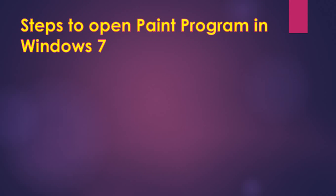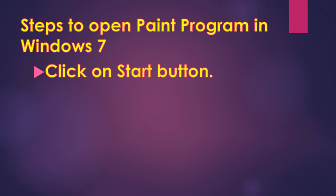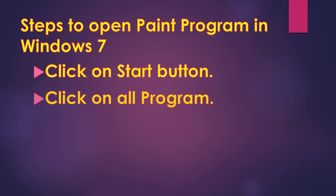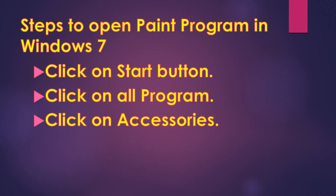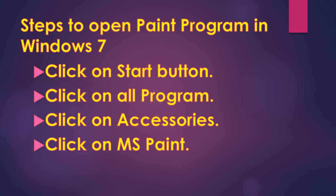Now the steps to open MS Paint in Windows 7. First step: click on the Start button. Second: click on All Programs, then click on Accessories, then click on MS Paint. So first we click on the Start button, then All Programs, then Accessories, and then Paint.